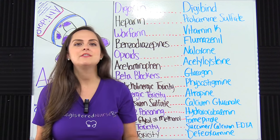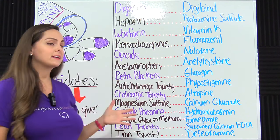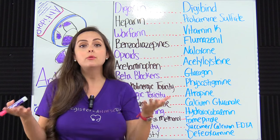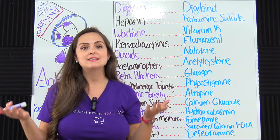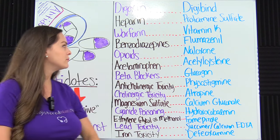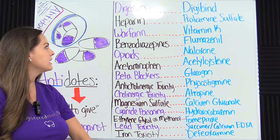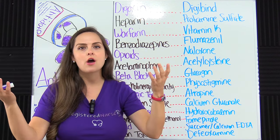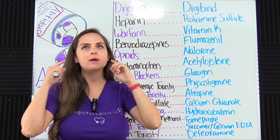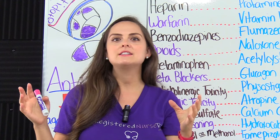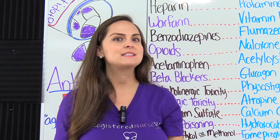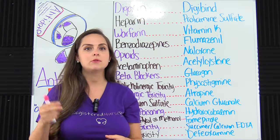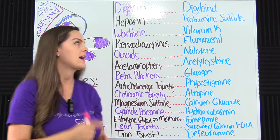What we're covering in this video are the 14 most common antidotes you want to know for your exams and whenever you're working as a nurse. It's always important — like if you're going to be giving heparin, warfarin, or digoxin — you want to know in the back of your mind what the antidote is in case your patient experiences toxicity, because you want to be able to go and grab that fast.